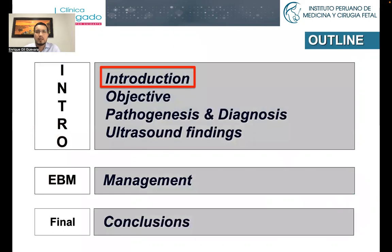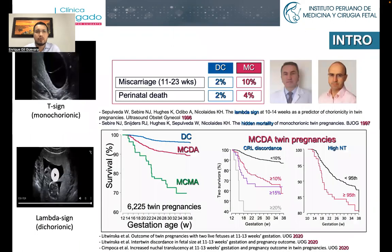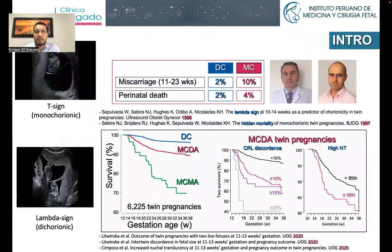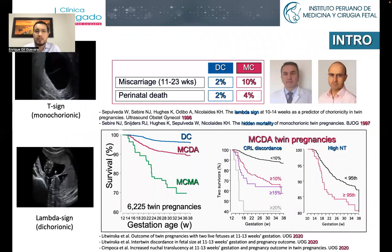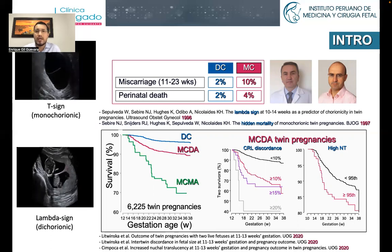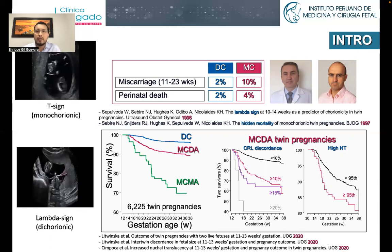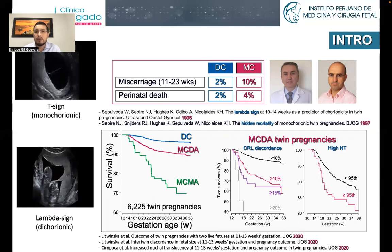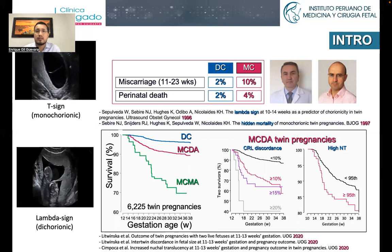As an introduction, we need to remember the importance of diagnosing chorionicity at the first trimester of pregnancy, mainly because monochorionic twins are going to have worse outcomes than dichorionic twins, and also because ultrasound checks are going to be more frequent, mainly looking for complications in monochorionic twins such as TTTS, selective FGR, and TAPS.